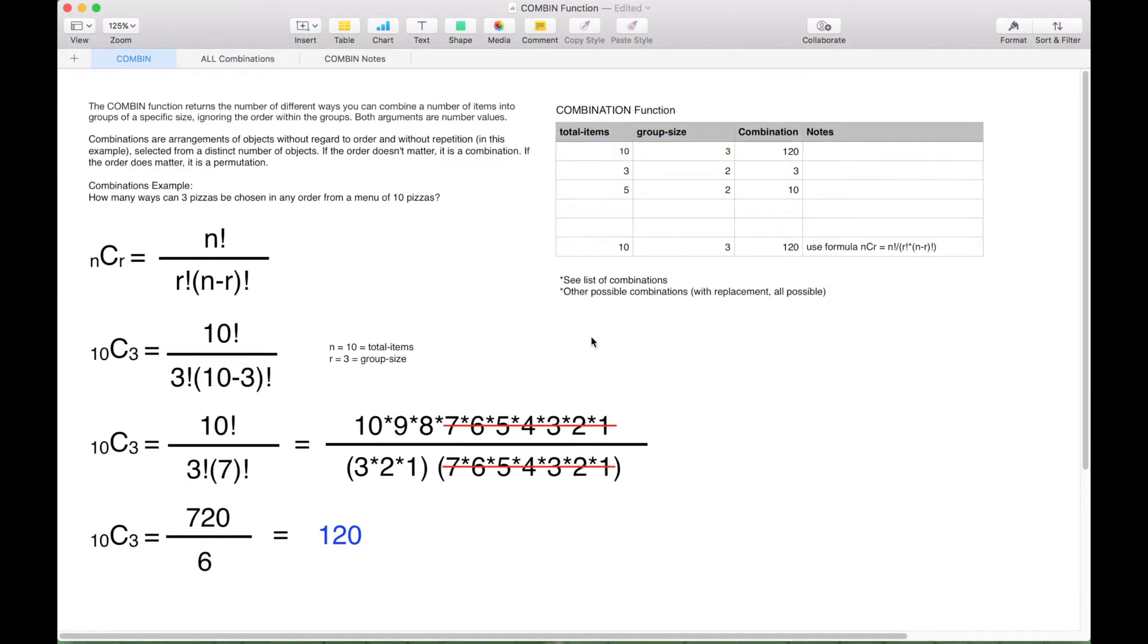Now there are a couple other variations when trying to figure out the different number of combinations for different data sets. One variation is when you're doing your calculation, you allow replacements. And another variation is when you try to figure out all possible combinations. So in that case, that would take this total number of items, and you would get rid of the group size, and you would try to figure out all the combinations for any possible group size.